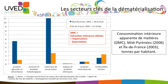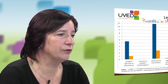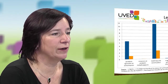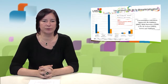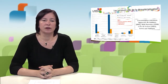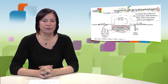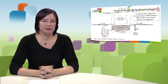This is also due, for construction materials, to the fact that construction activity in the south of France is very significant. What we need to insist on is that three flows require our attention if we want to talk about dematerialization: construction materials, which are still the most important whatever the region we study in France, fossil fuels, and farming and food products — these are the ones in which we should try to reduce material use.